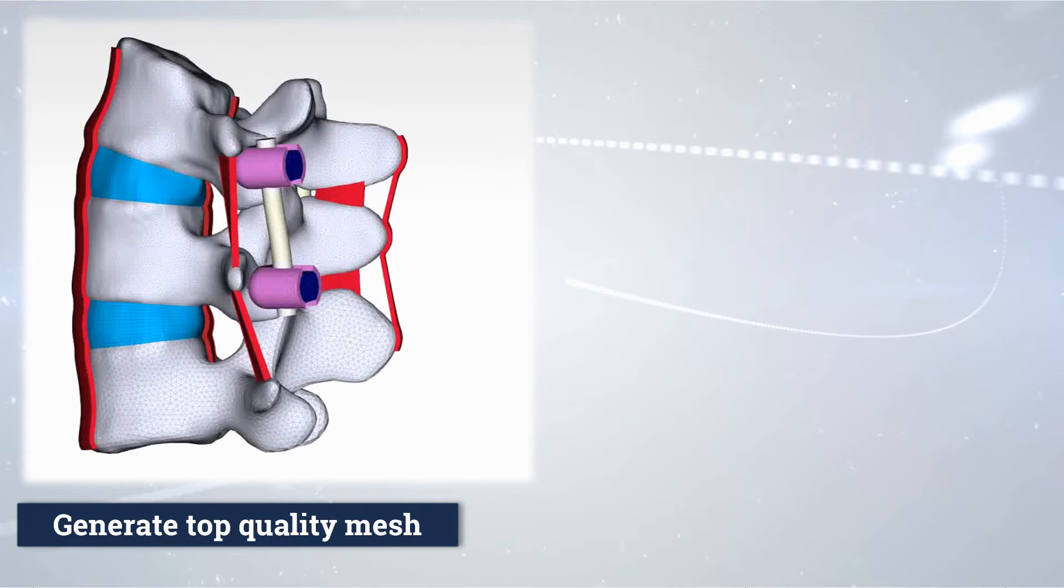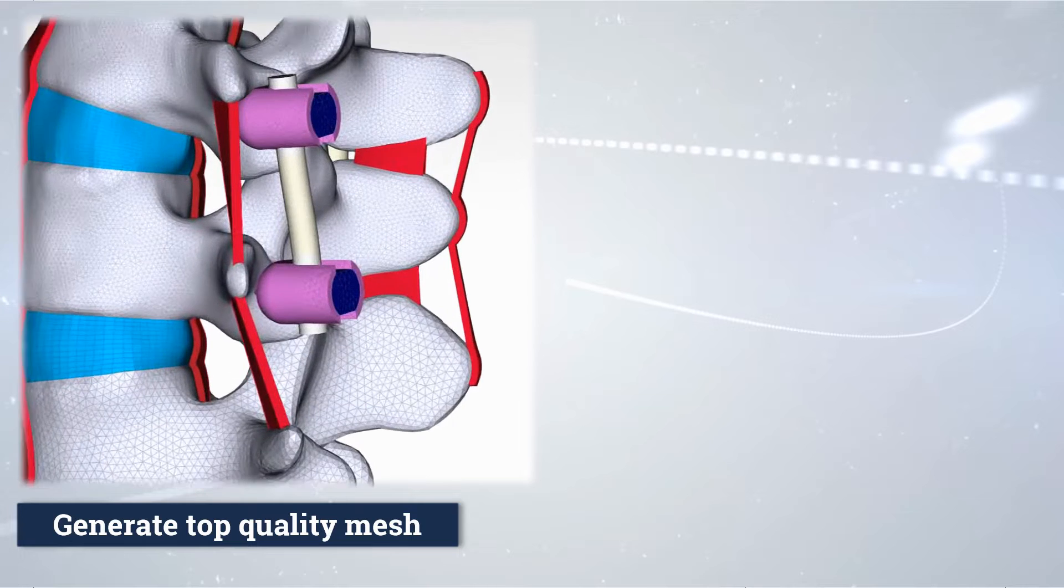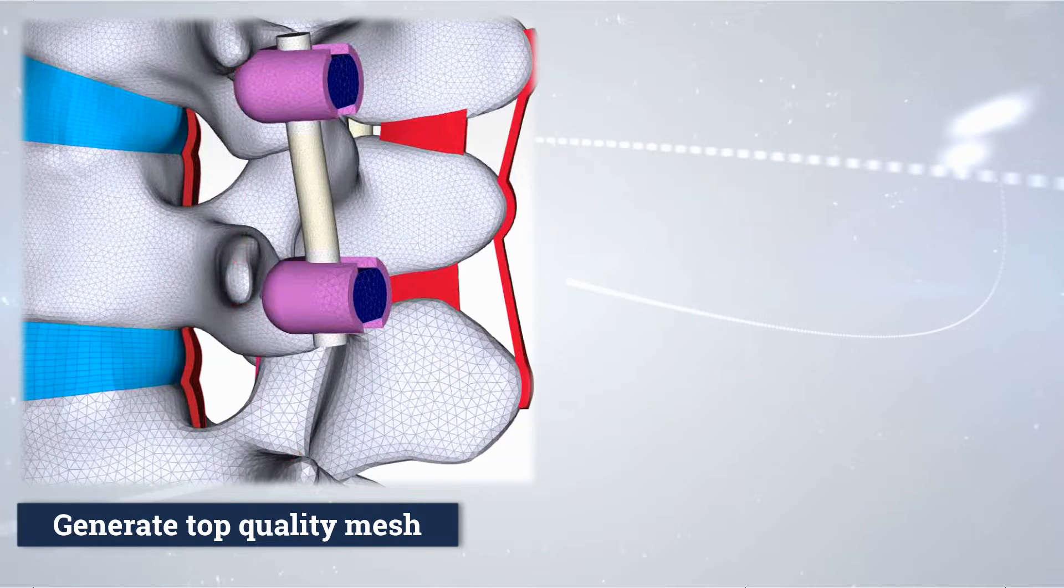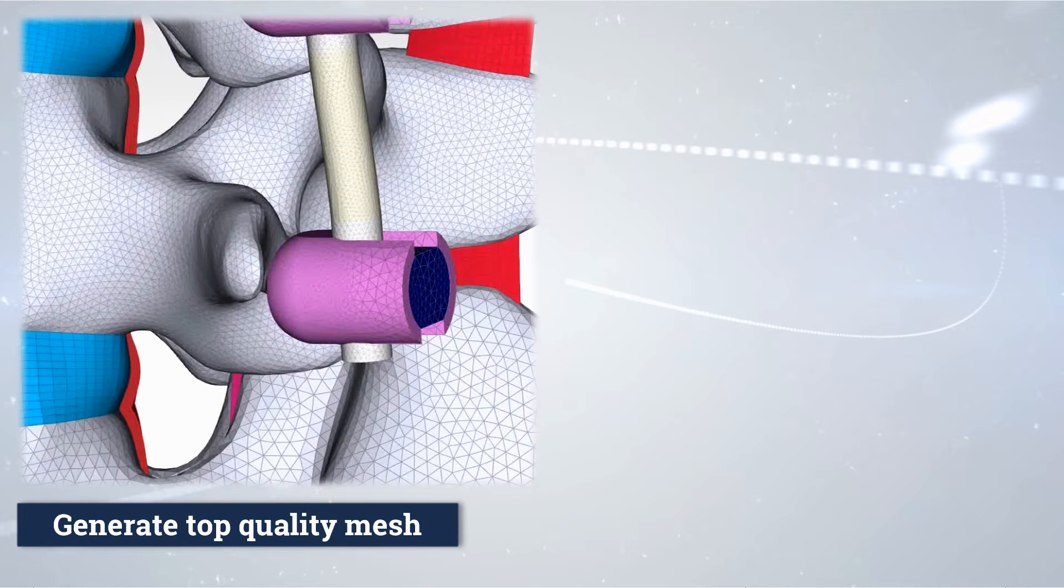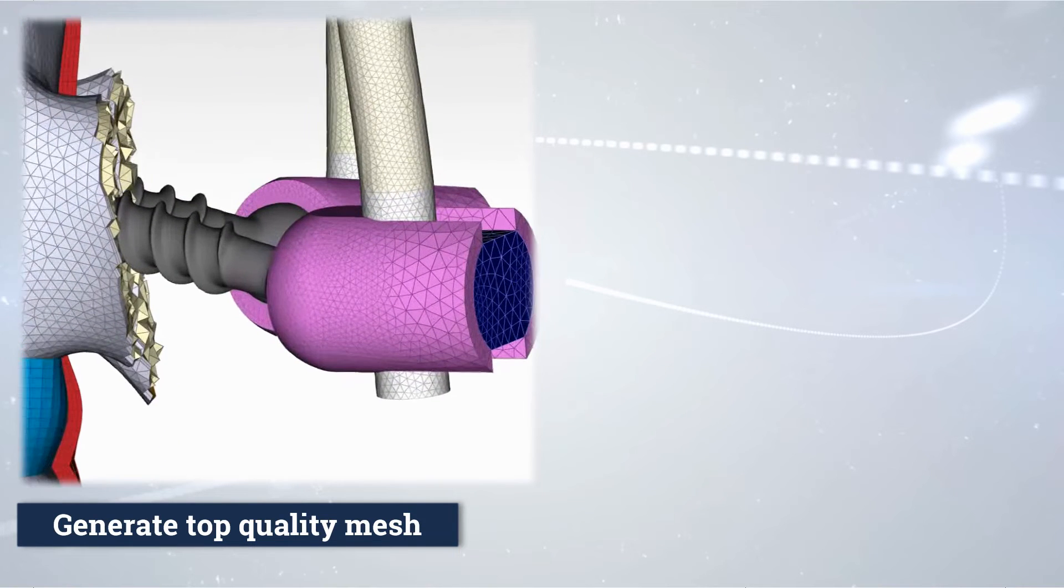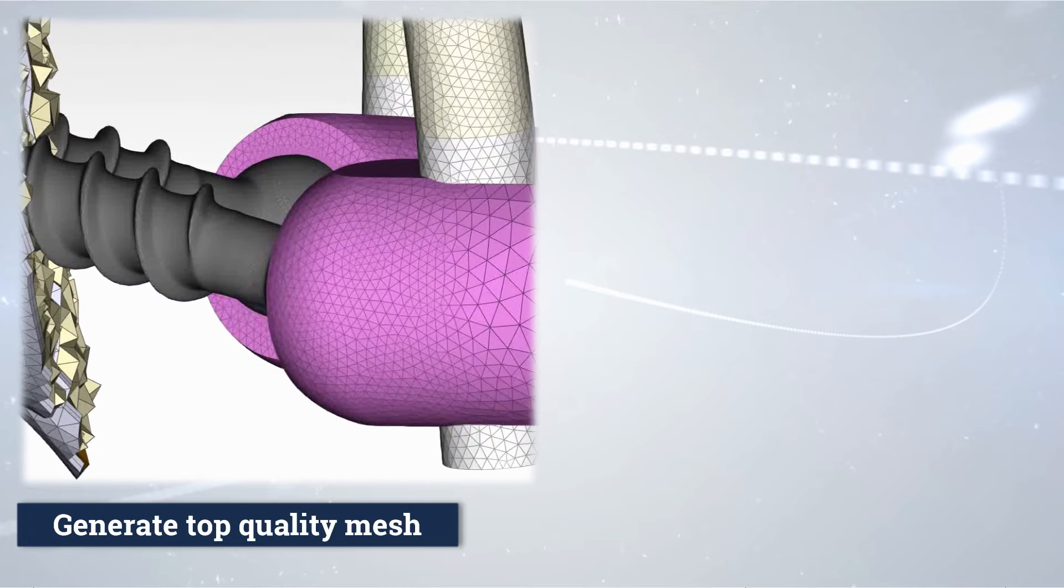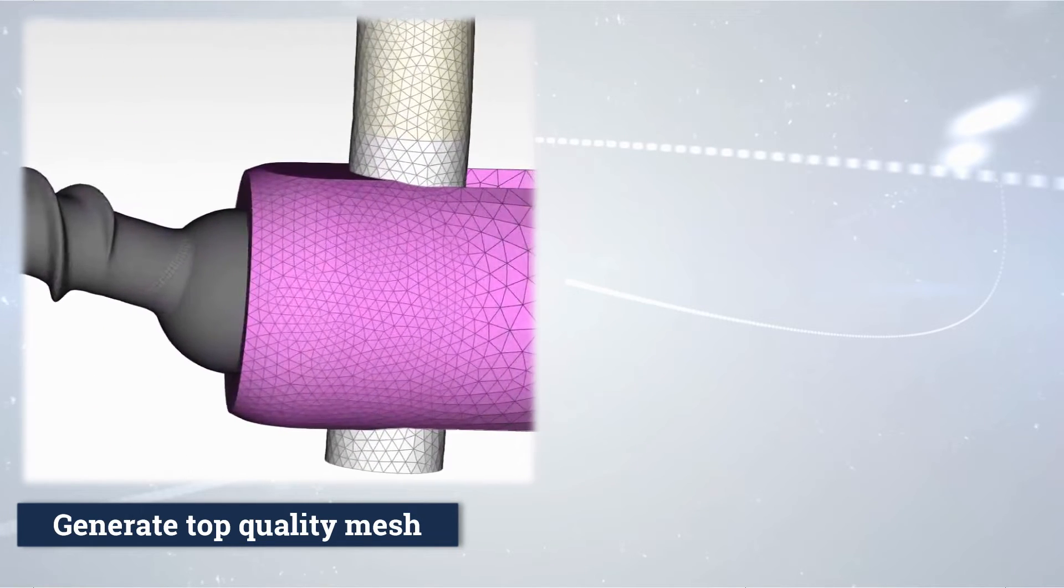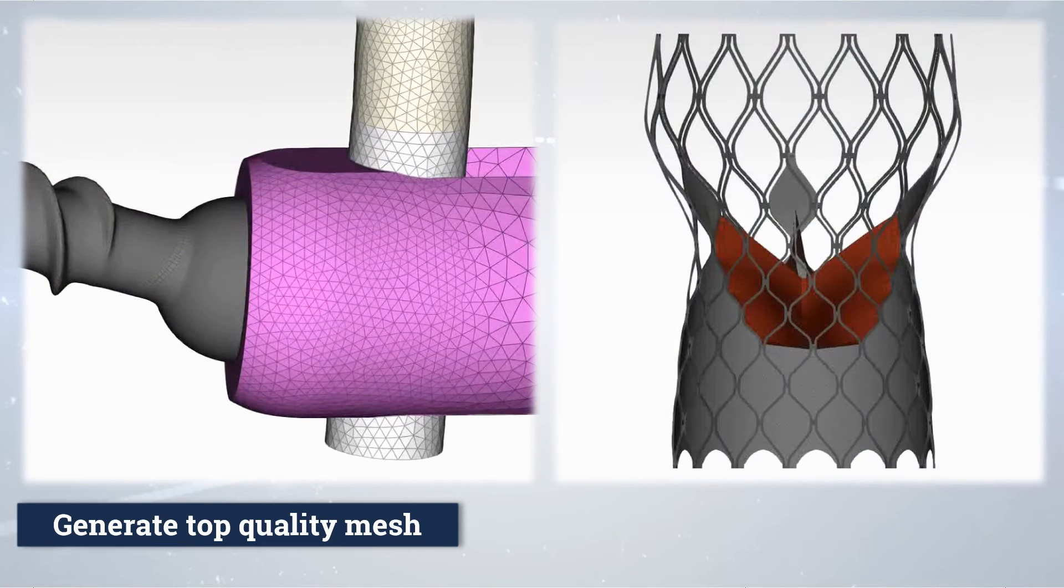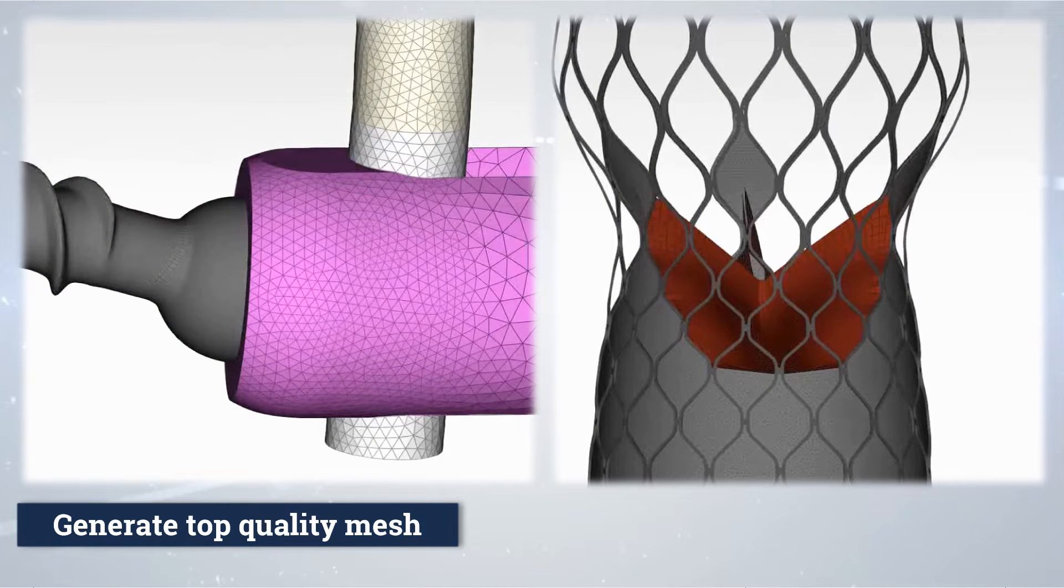ANSA offers fully automatic curvature-dependent surface meshing that allows control of the growth rate, the minimum and maximum element size, ensuring local mesh refinement and smooth transition from finer to coarser regions.